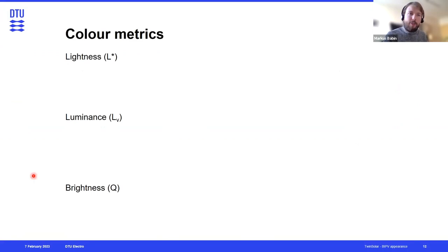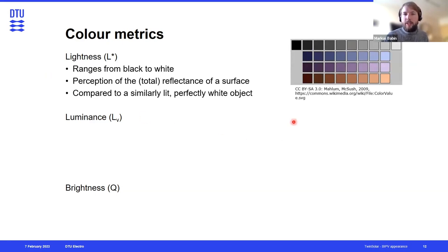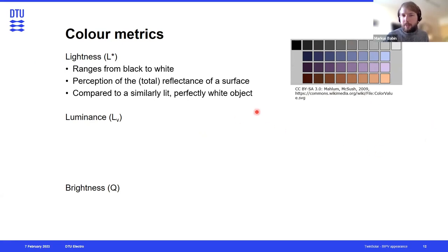The next few slides describe some color metrics. The first is lightness — L* — which is also used in the CIE LAB color space. It ranges from black to white and can be applied to colors, basically describing the total reflection of a surface as perceived by a human. In this graph, all these colors have the same lightness in the column but different color tones.